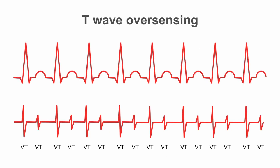T-wave oversensing. This is something we try and troubleshoot at implant. T-wave oversensing is quite a simple concept — essentially the T-waves visible here are also being picked up on the ventricular electrogram and being marked as a genuine ventricular event. Obviously if this patient's heart rate was 100 beats per minute and we were T-wave oversensing, you're essentially doubling their heart rate, and the device might record their rate as 200 beats per minute and deliver inappropriate therapy.